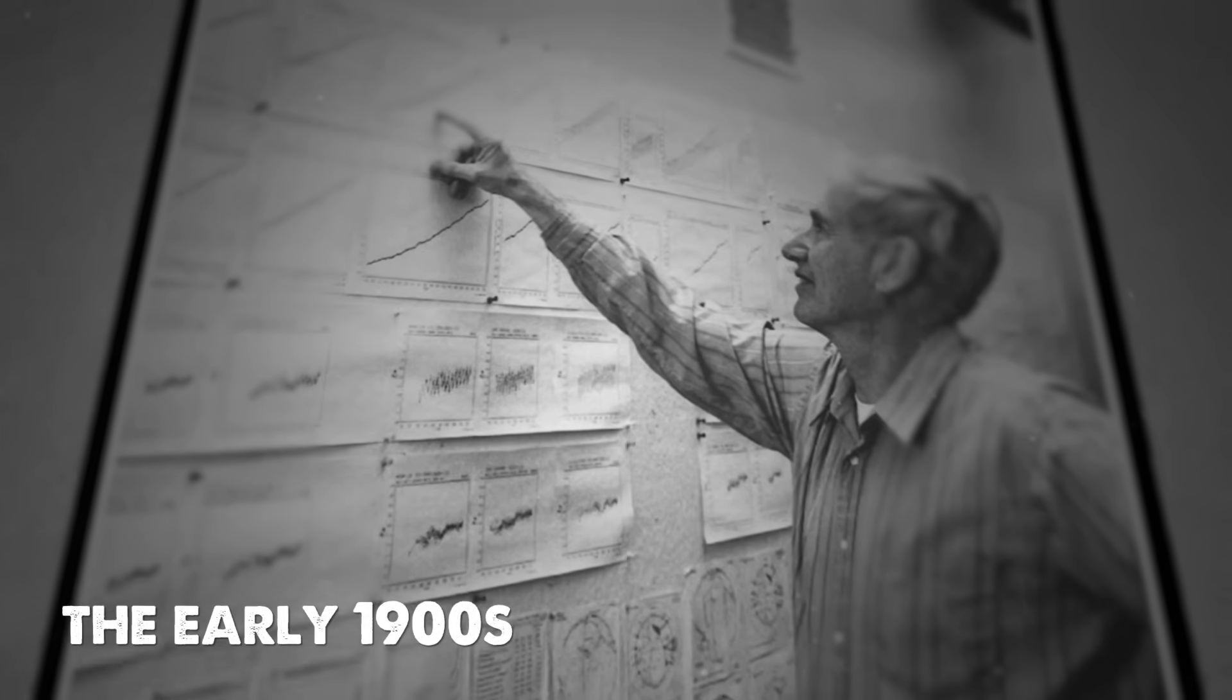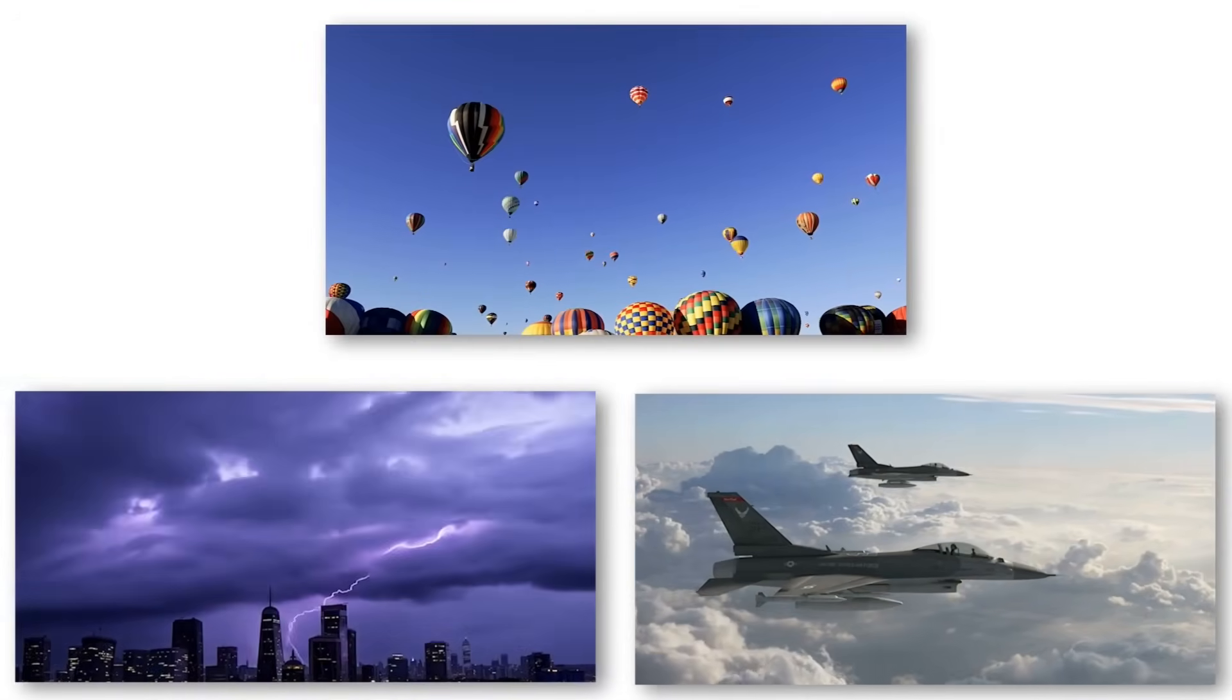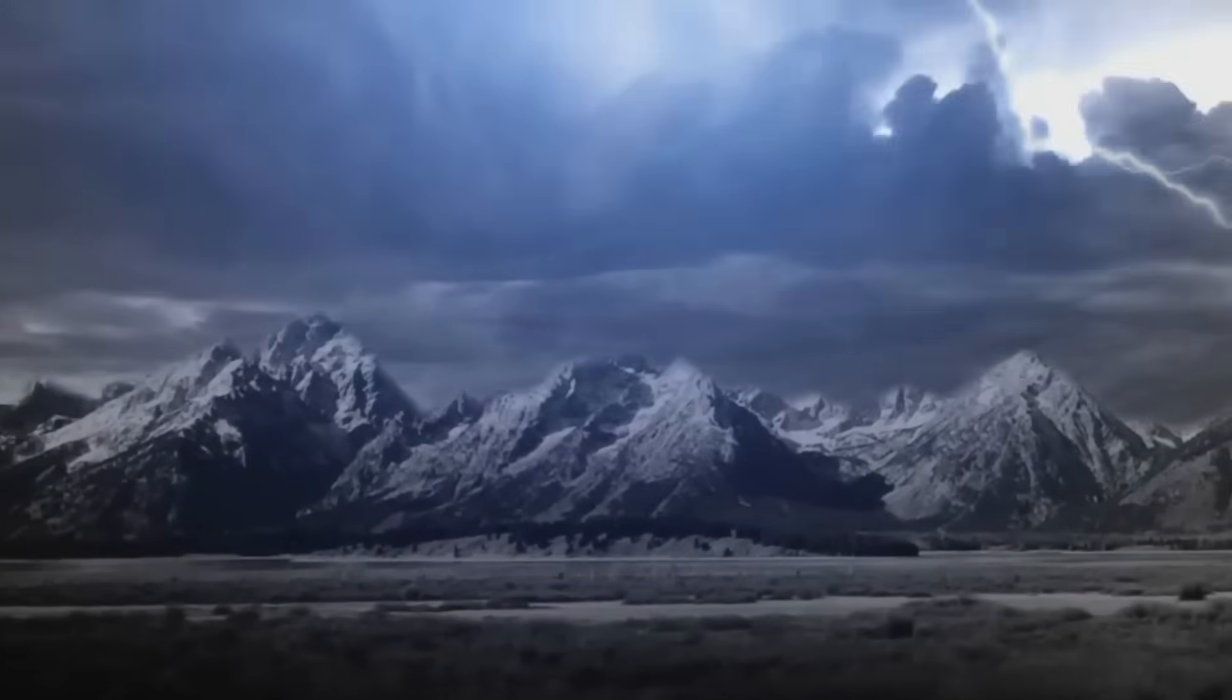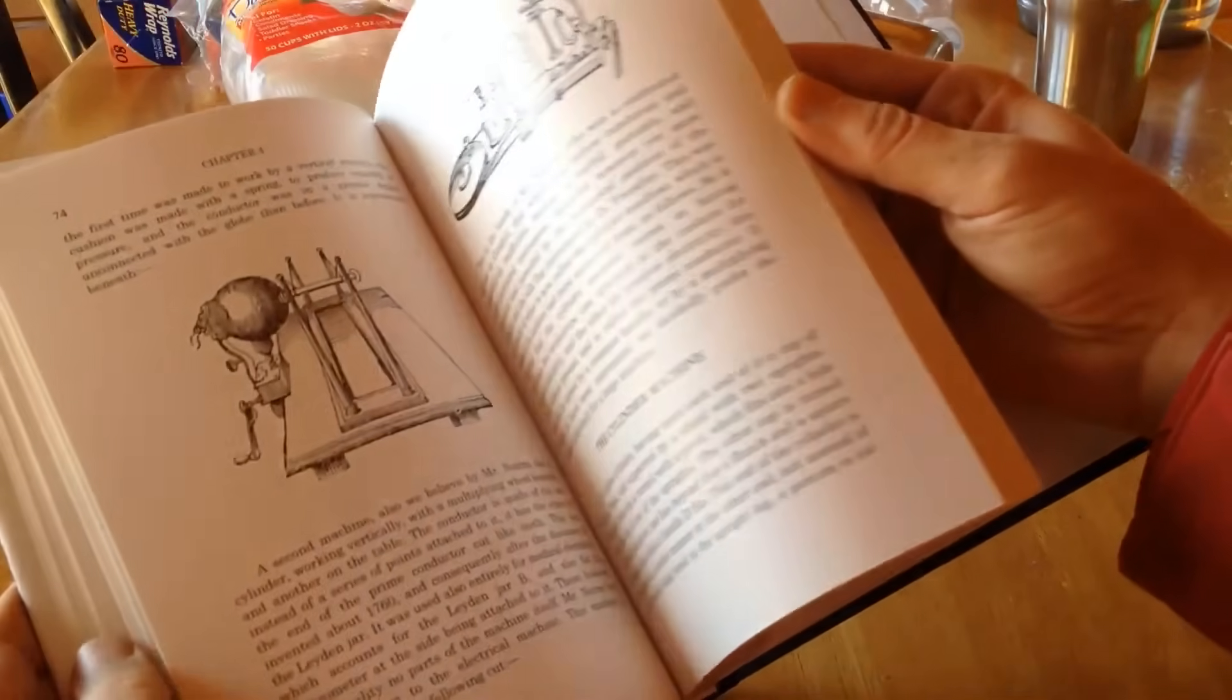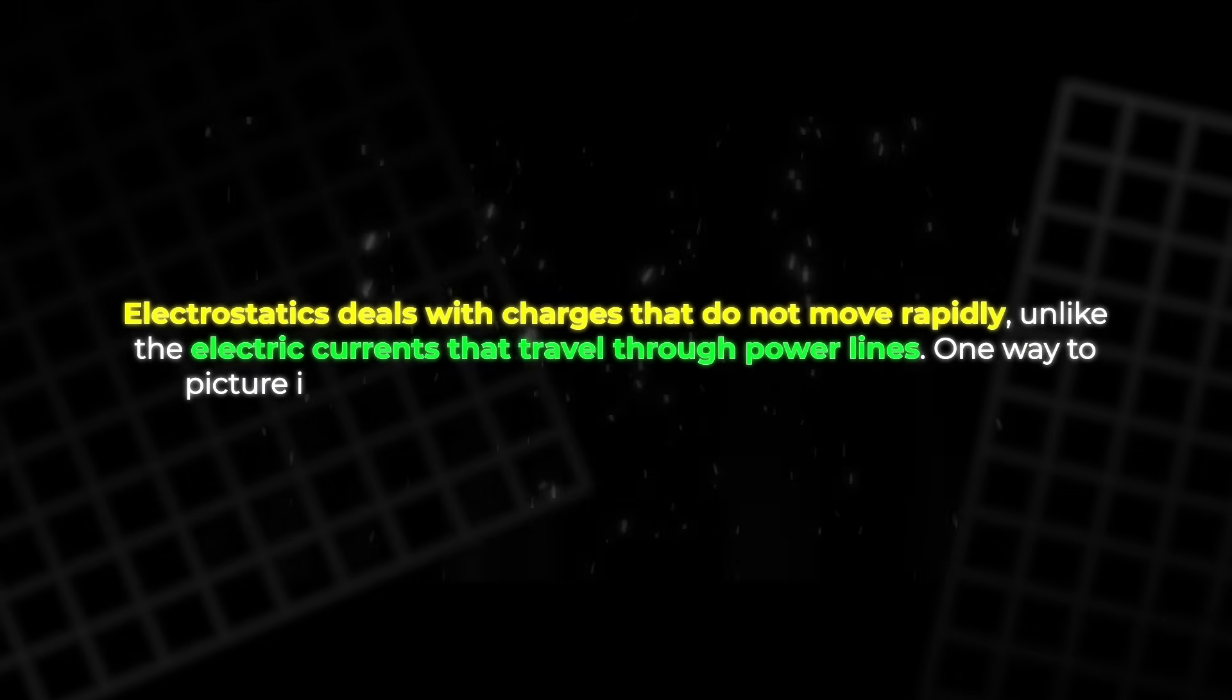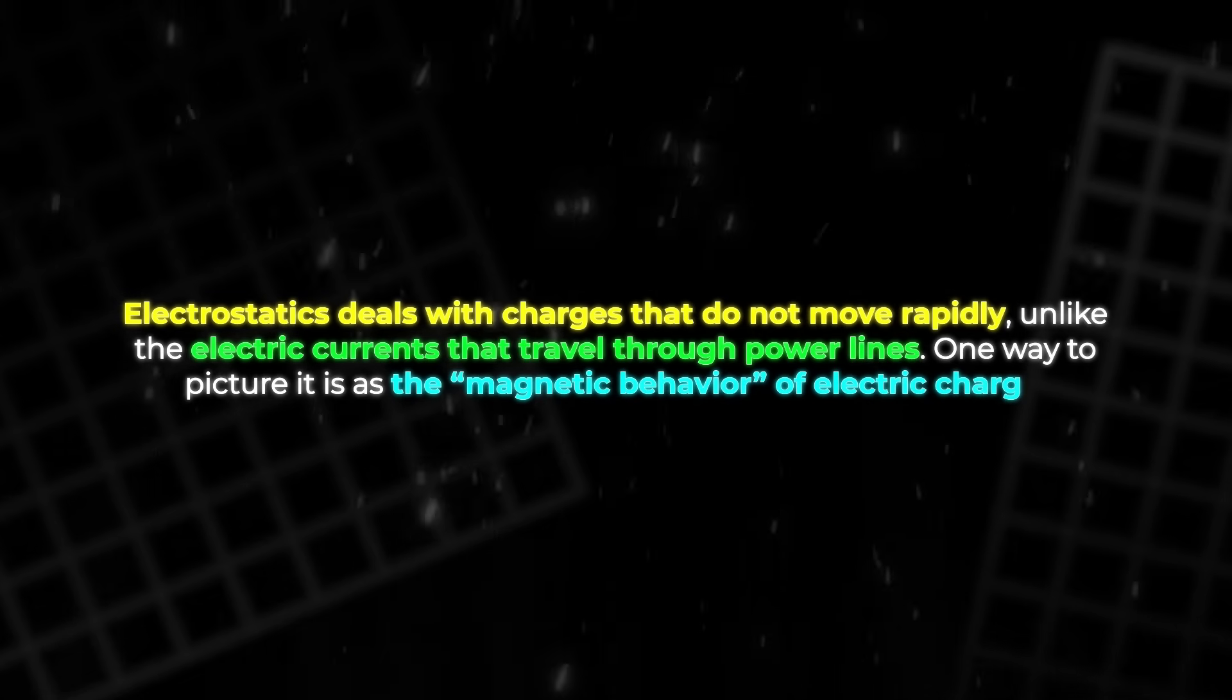Scientists have measured this effect since the early 1900s. Balloons, towers, and aircraft have all confirmed the existence of the atmospheric field. Lightning itself is the most dramatic evidence. It is the natural discharge of the very field that surrounds us. This entire phenomenon belongs to the study of electrostatics. Electrostatics deals with charges that do not move rapidly, unlike the electric currents that travel through power lines. One way to picture it is as the magnetic behavior of electric charge.